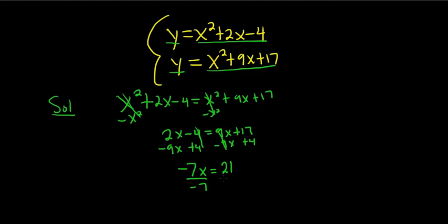So dividing by negative 7, we have x equals negative 3. That's the x-coordinate of our answer.